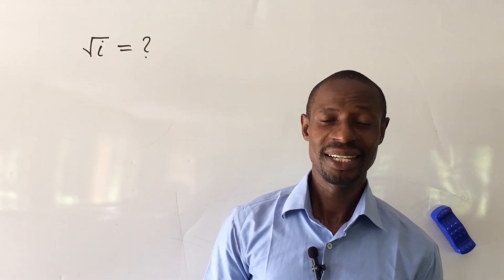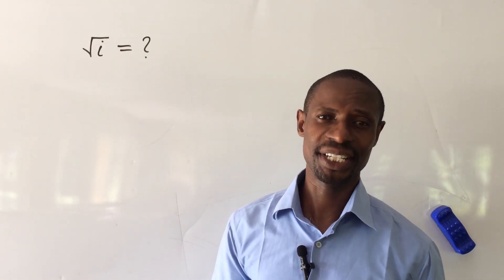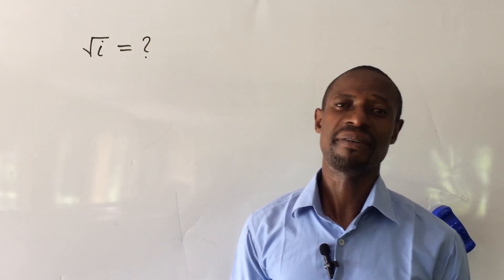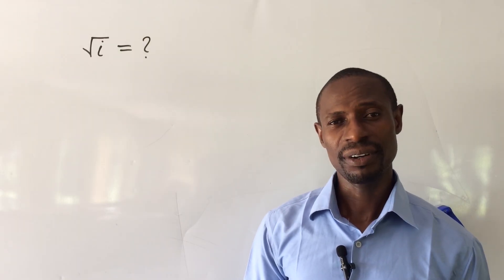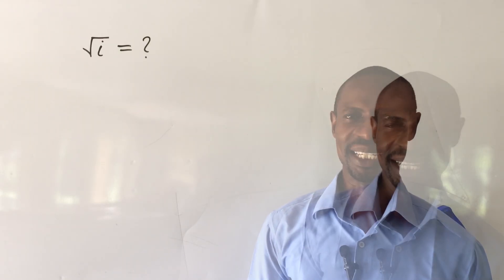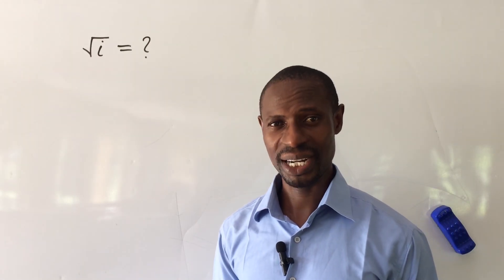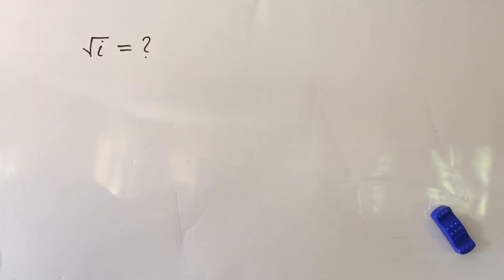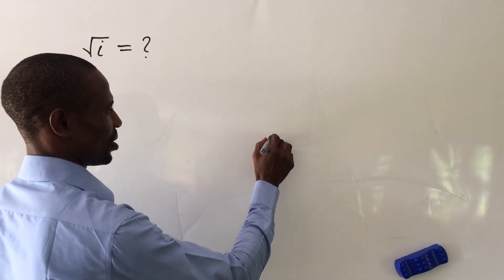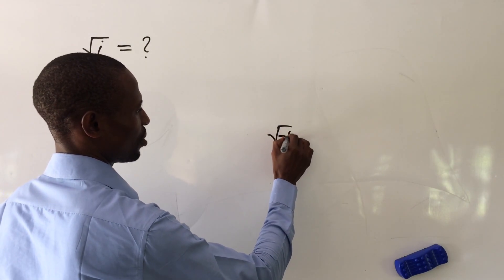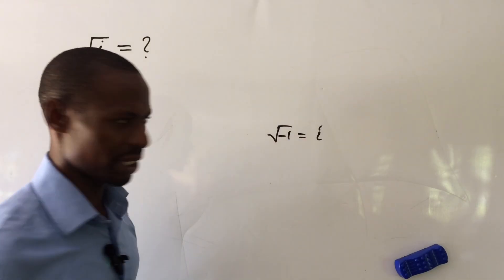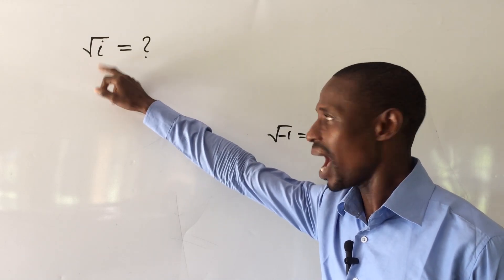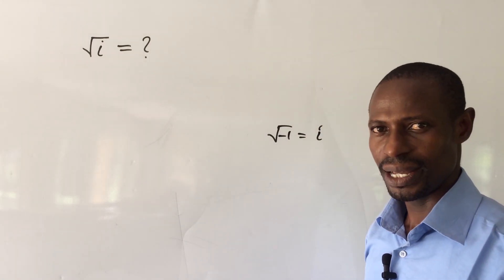Welcome to today's class, this is Online Mouse TV. Today we have a challenge on the board: how to find the square root of iota, which is the symbol i for imaginary numbers in mathematics. The question was drawn by one of my viewers. We know in mathematics that the square root of negative one equals iota, so how do we find the true value of the square root of i?